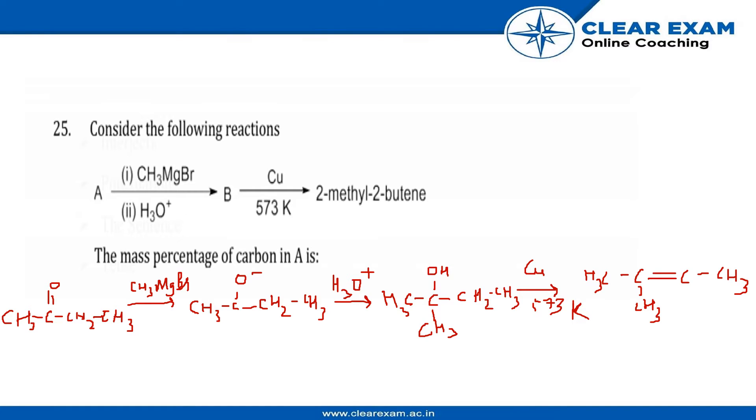In the question we've been given consider the following reactions. A reacts with CH3MgBr which is Grignard's reagent and undergoes hydrolysis to form B, and then it reacts with copper at 573K to form 2-methyl-2-butene. Now we have to find the mass percentage of carbon in A.